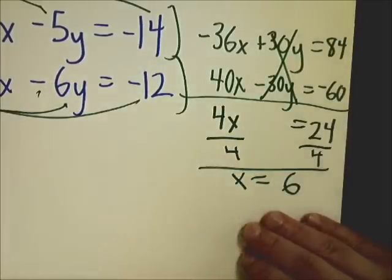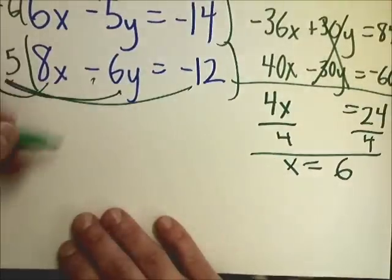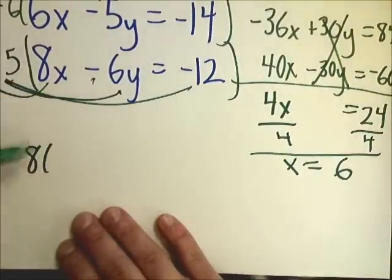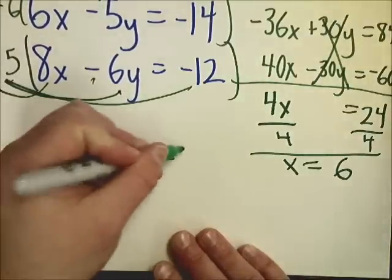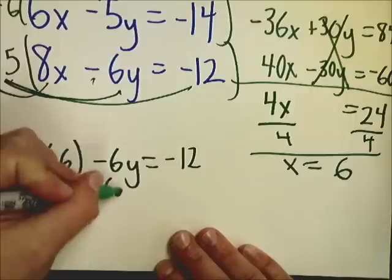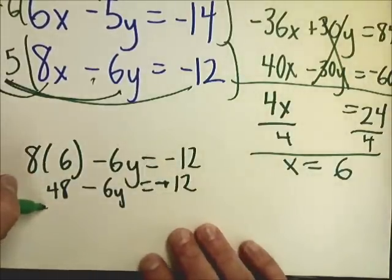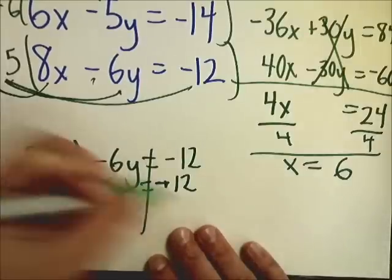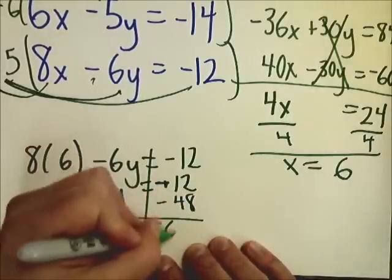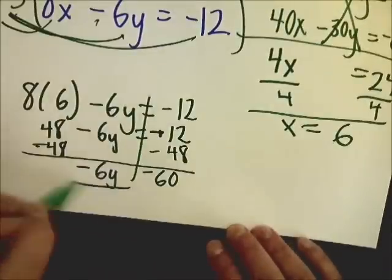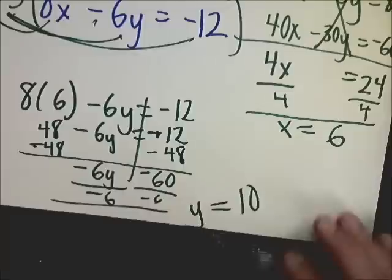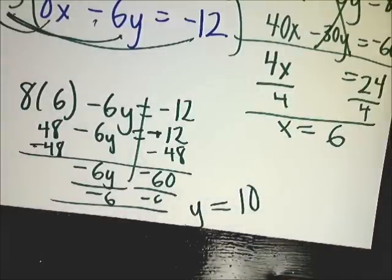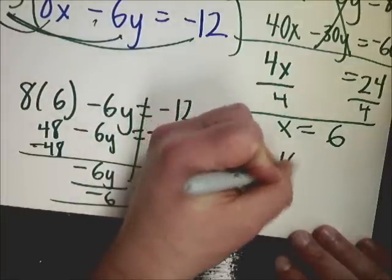To find my y value, I need to go back into one of the original two. 8 times 6 minus 6y equals negative 12, that'd be 48. To get rid of plus 48, I need to subtract, giving negative 60. Negative 6y divided by negative 6, and I get a final y value of 10. So that would mean that my point of intersection or my solution to systems of equations would be 6 comma 10.